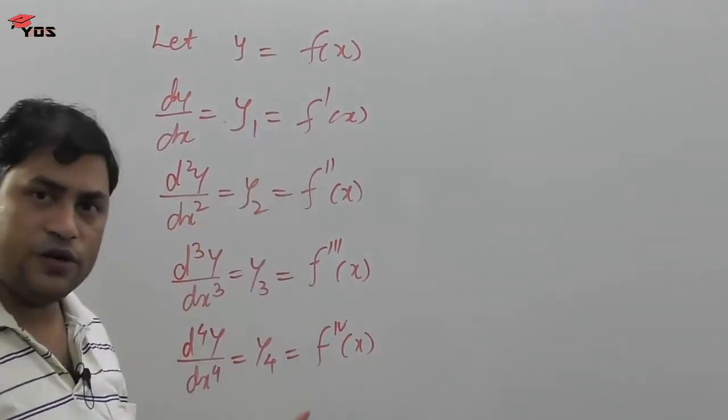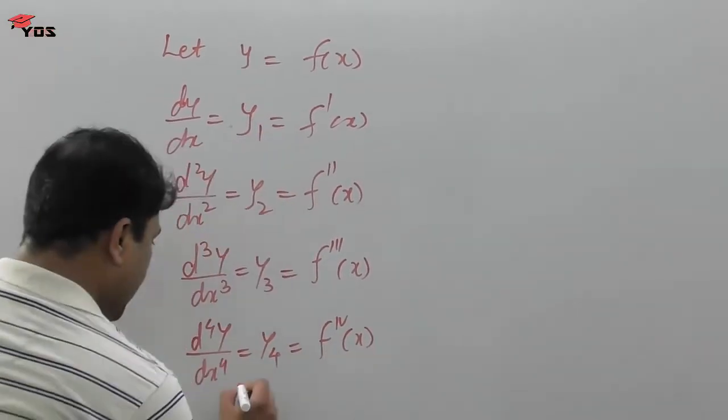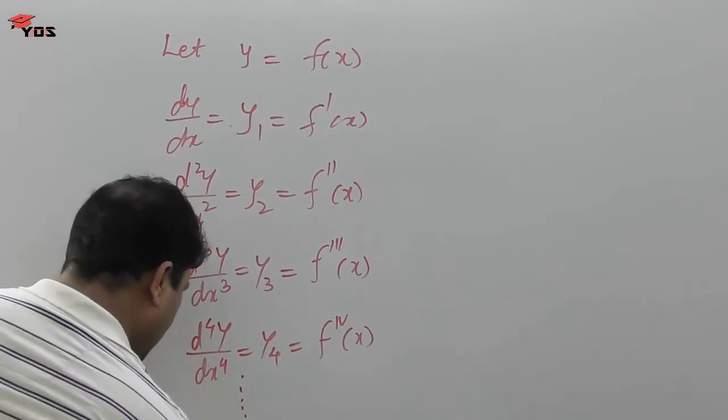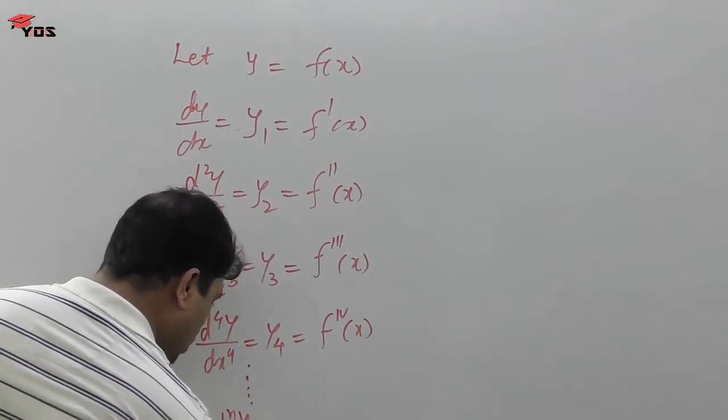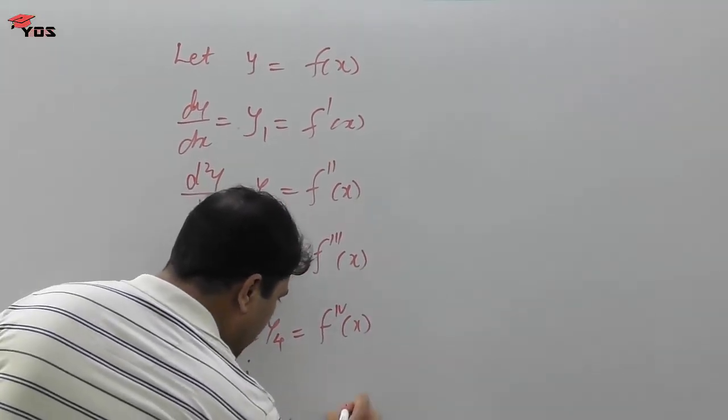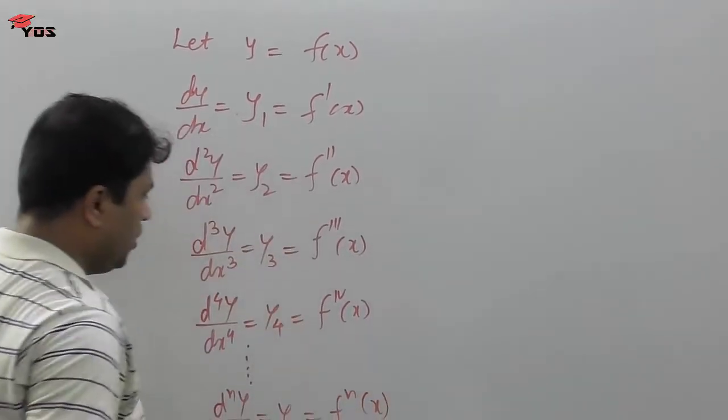If we go on differentiating this way, then we can have the nth derivative, that is dⁿy by dxⁿ equals yₙ equals f to the n of x.